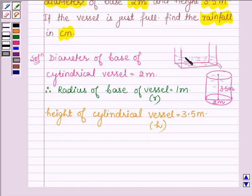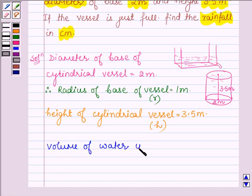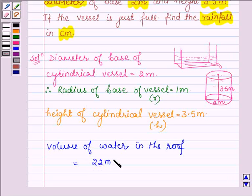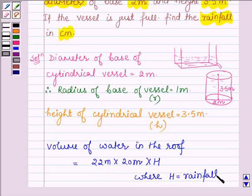The height of the cylindrical vessel is equal to 3.5 meters. Now, the water collected in this roof, which is in the shape of a cuboid, is given by length × breadth × height, where length × breadth is given as 22 meters × 20 meters, and h is the rainfall in centimeters.